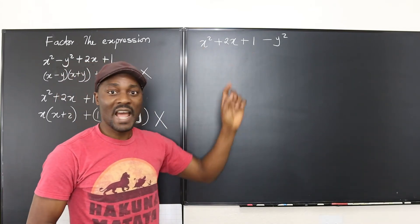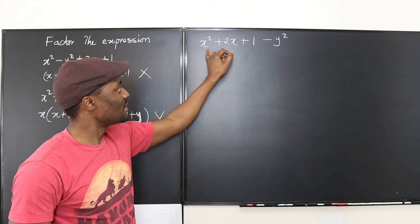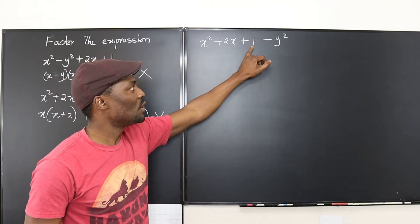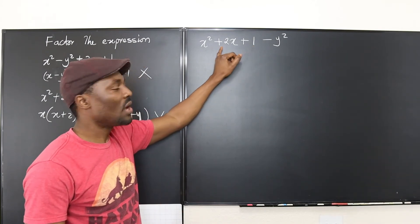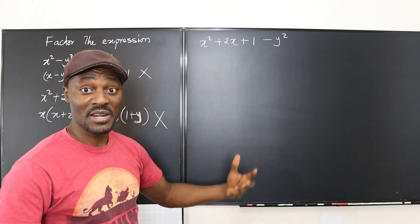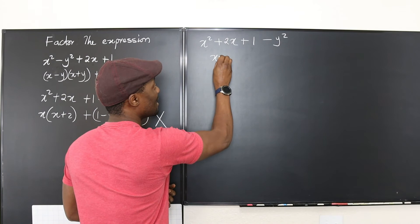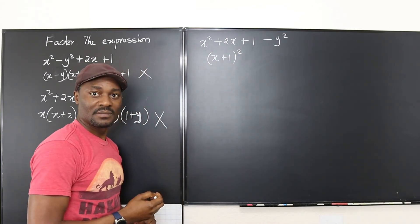Can we factor this? Because this actually looks like a perfect square—it's a perfect square binomial. What two numbers will you multiply to get plus 1 and when you add them you're gonna get plus 2? Well, those numbers are 1 and 1. So this is actually a perfect square binomial which is gonna be (x + 1)² - y².